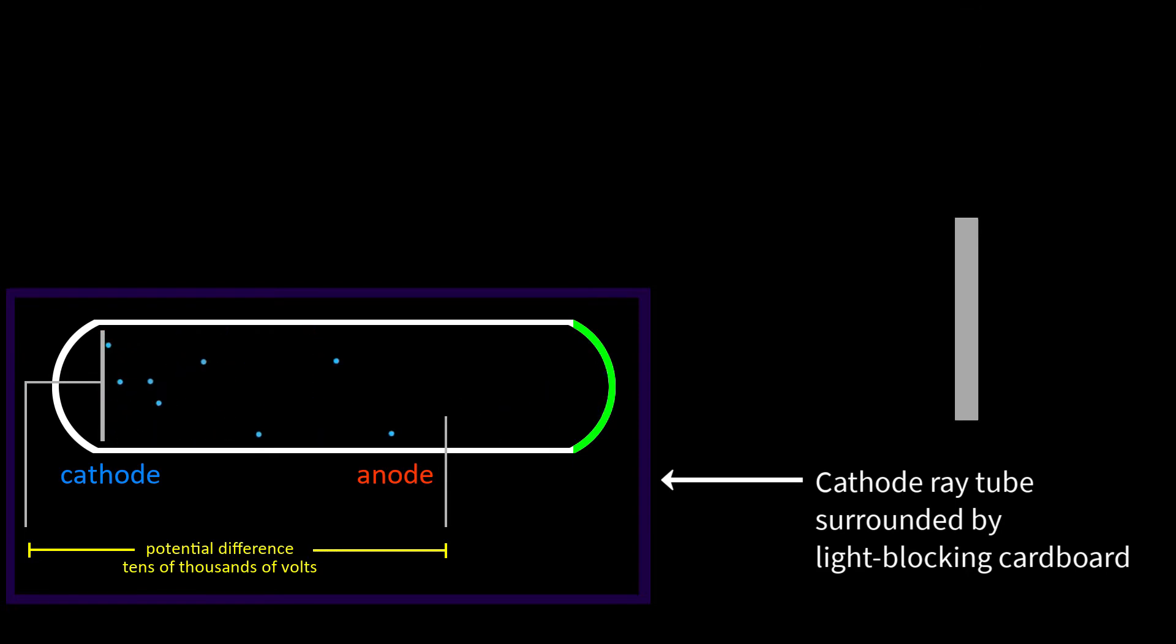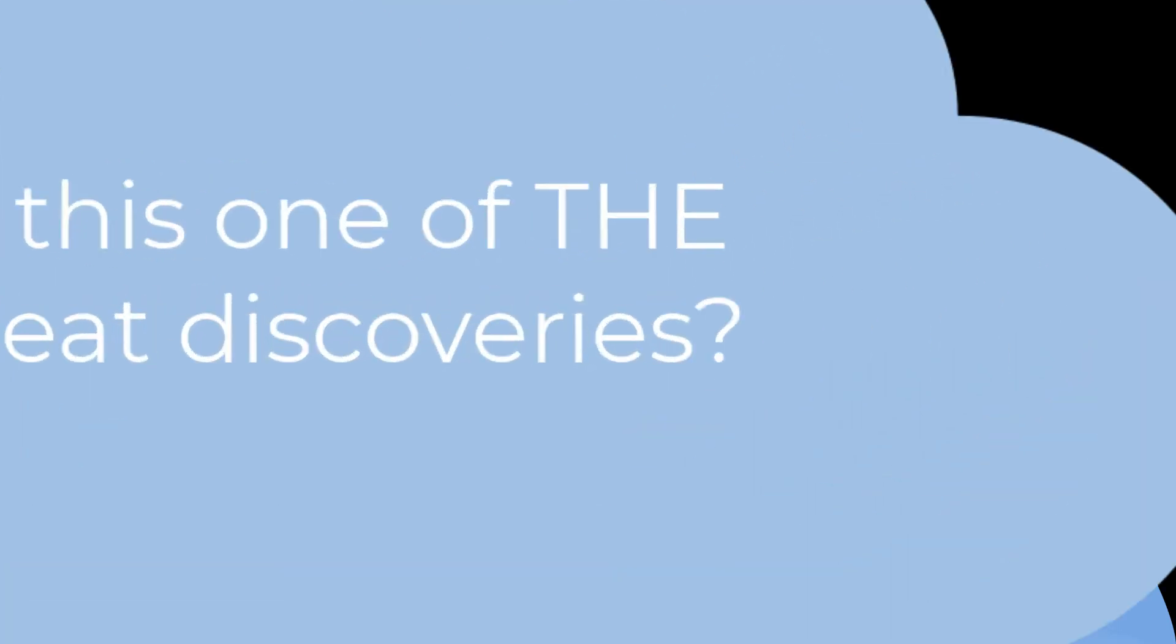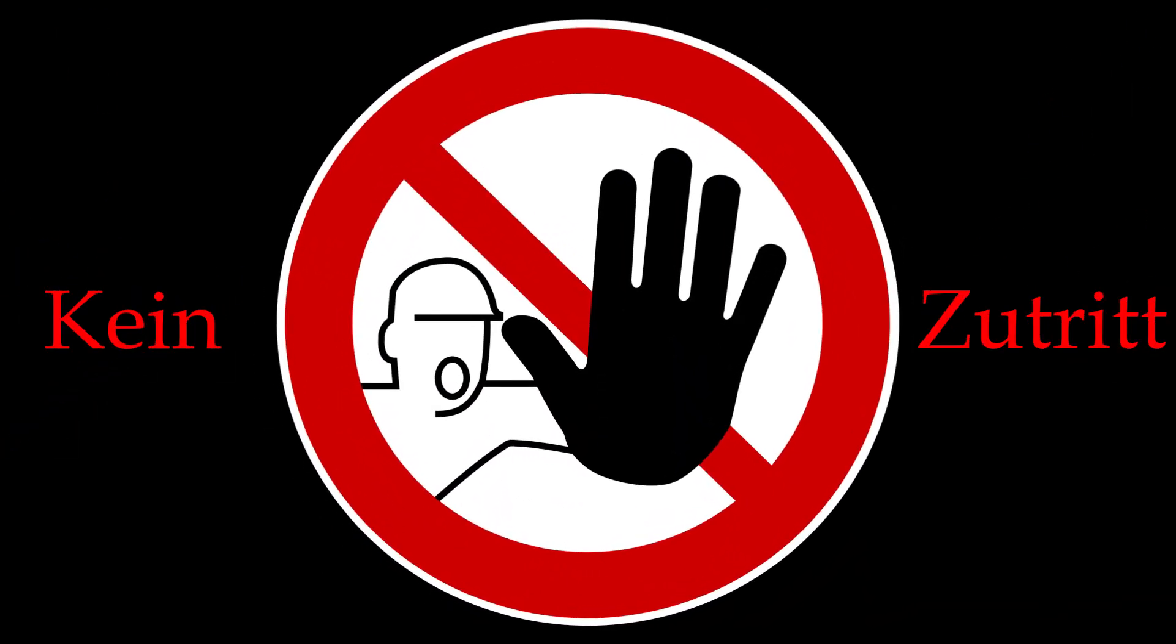Röntgen knew he was onto something big. He lived in his lab for the next few days. He slept there and didn't allow anyone else in, not even his usual assistants.